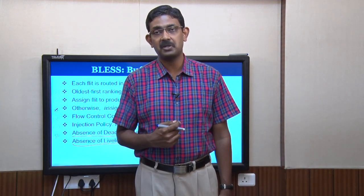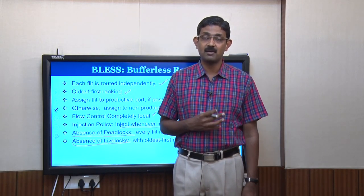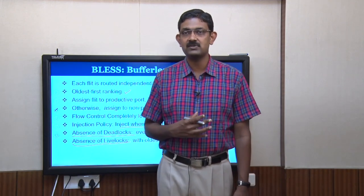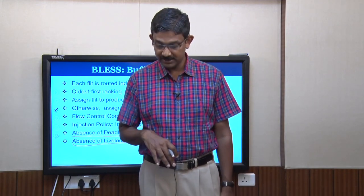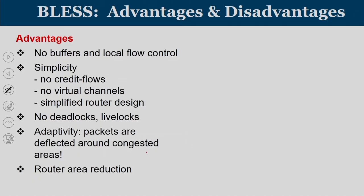Live lock is eliminated by virtue of oldest flit highest priority routing — the oldest flit always gets the productive port, and since everyone eventually becomes the oldest flit in the system, there are no more deflections. The advantages of BLESS — bufferless routing — include: no buffers, strictly local flow control requiring no handshake mechanism, no credit flow, no virtual channel designs, and a fairly simple router design with no deadlocks or live locks.